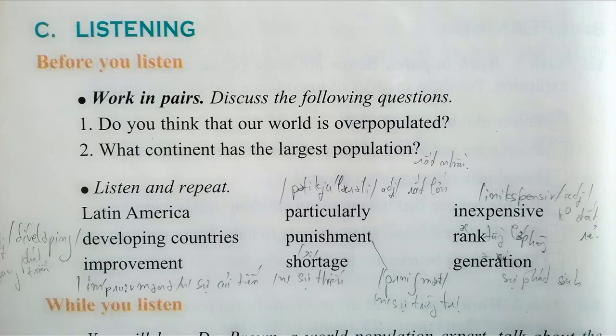Do all parts of the world have the same rate of population growth? No, they don't. The population is growing more quickly in some parts of the world than others. Latin America ranks first, Africa second, and Asia third. Now, what is the main reason for the population explosion?